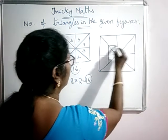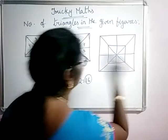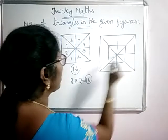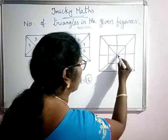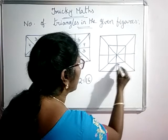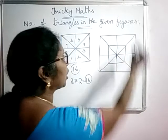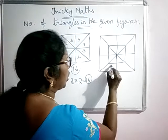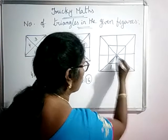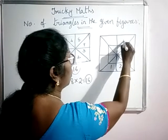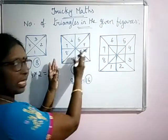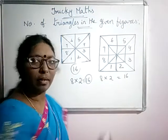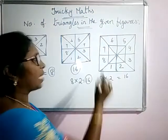But here, in order to count the number of triangles, you see in this figure there are 2 squares inside. First, if you think the inside square is not there, this outer square has 1, 2, 3, 4, 5, 6, 7, 8 divisions. So the number of triangles in the outer square is 8 into 2, which is 16. If that inner line is not there, you will have 16 triangles.